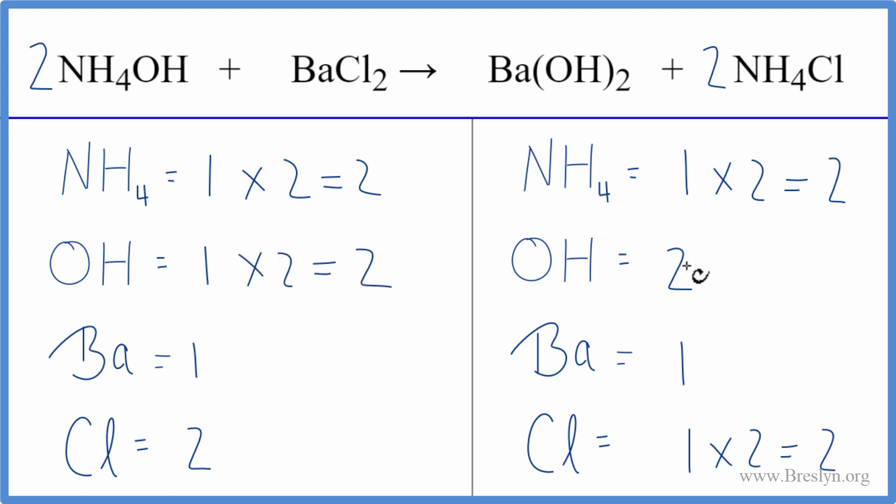This equation's balanced. So counting these polyatomic ions as just one item, if they appear on both sides, that really makes it easy to balance. It's less confusing, you don't have to count a lot of individual atoms. This is Dr. B with a balanced equation for ammonium hydroxide plus barium chloride. Thanks for watching.